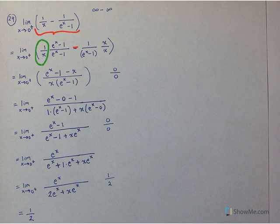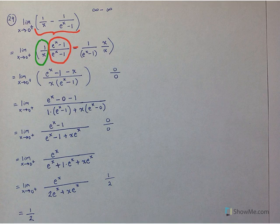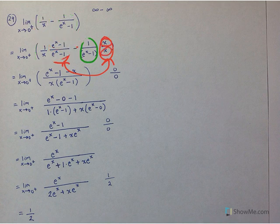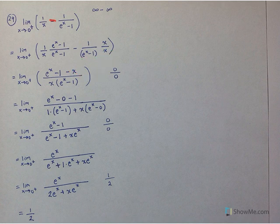We'll multiply each fraction by a form of 1 — since multiplying by 1 doesn't change a quantity (1 is the multiplicative identity). We multiply 1/x by one form of 1, and 1/(e^x - 1) by another form of 1, chosen specifically so that both fractions share a common denominator and can be subtracted.